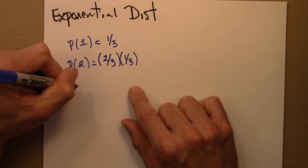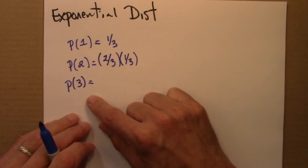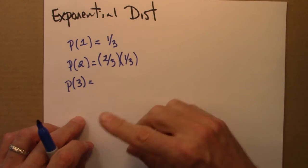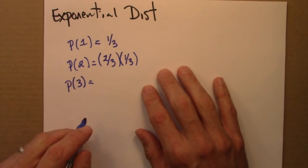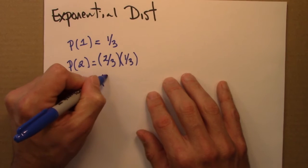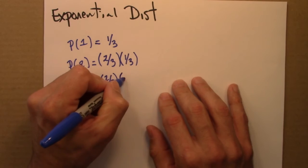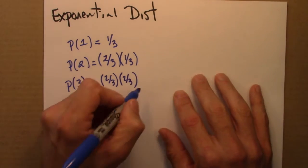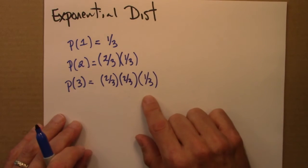What about P(3)? What's the probability that it takes me three throws to get this piece of paper into my recycling bin? Well, three things have to happen. I have to miss the first throw. That happens with probability two thirds. I have to miss the second throw. Also happens with probability two thirds. And then make the third throw.